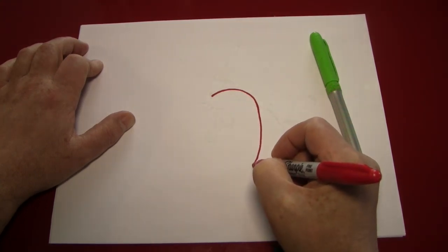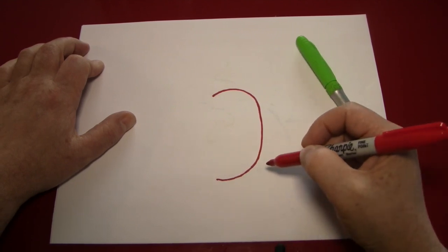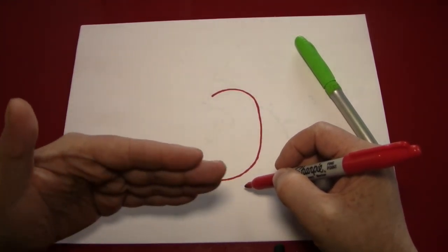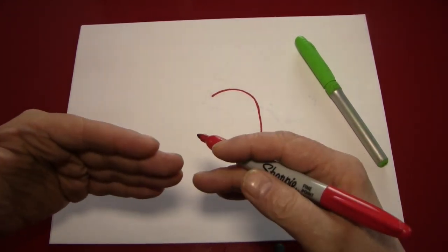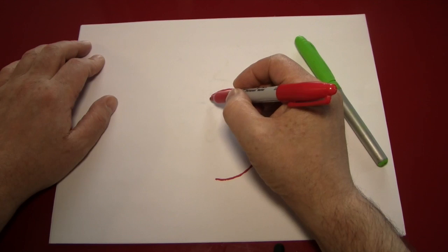And as we go around, we'll make sure that we end it with a fairly flat line, with a fairly horizontal line. And then do the same on the other side.